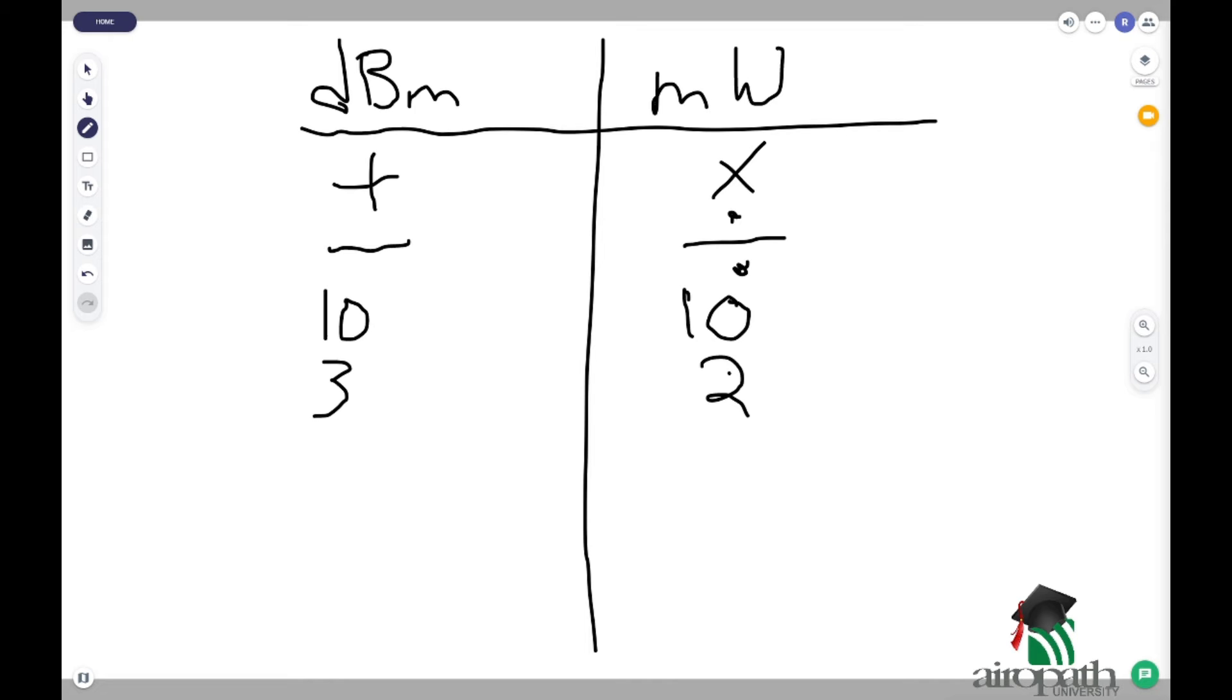And that is 1 dBm is equal to 1.25 milliwatts. And 2 dBm is equal to 1.56 milliwatts.